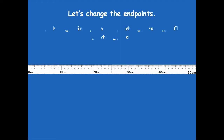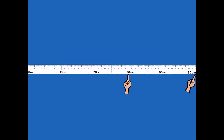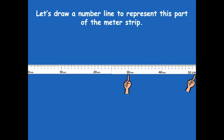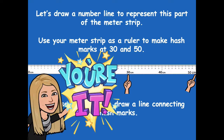Let's change the end points. Put your finger on 30 centimeters and on 50 centimeters — here and here. Let's draw a number line to represent this part of the meter strip. Use your meter strip as a ruler to make hash marks at 30 and 50, then use your ruler to draw a line connecting them. Hash marks are just a little line up and down. Pause the video and draw your new number line from 30 to 50. If you don't have a meter strip, you can draw a line using a ruler that's 20 centimeters long.